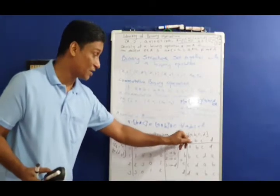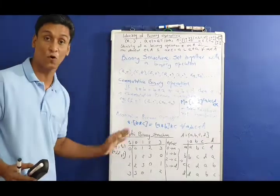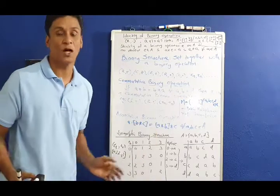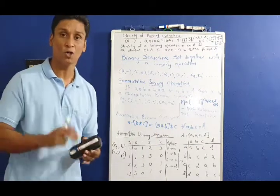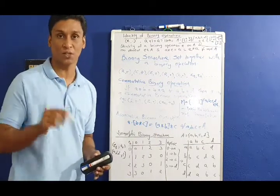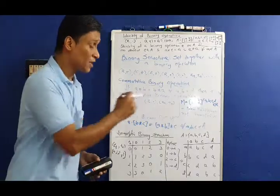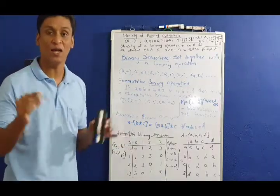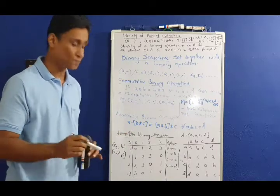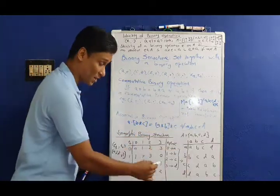We say that these two sets — A equals {A, B, C, D} and Z4 under +4 — are isomorphic, because they have the same operations and the same structure.